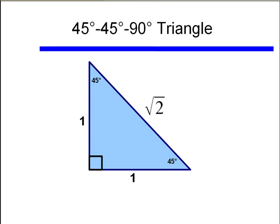It will come in handy if you can easily and quickly sketch the 45-45-90 triangle, with its legs of length one, and the hypotenuse of length square root of two.